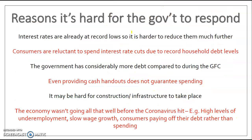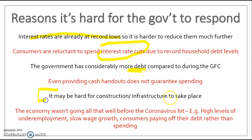There are several reasons why it's harder for the government to respond now. Interest rates are already at record lows, so further decreases are unlikely to drive spending — especially given high household debt levels and the fact consumers simply can't go out and spend. The government also carries more debt, making additional expenditure harder, and direct infrastructure spending is complicated by restrictions on people gathering. Finally, the economy was already underperforming before COVID, with high underemployment, slow wage growth, and limited spending.